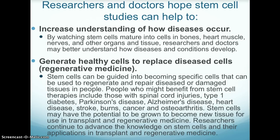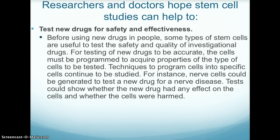Researchers continue to advance knowledge on stem cells and their application in transplant and regenerative medicine. Researchers also hope to use stem cells to test new drugs for safety and effectiveness. Before using new drugs in people, some types of stem cells are useful to test the safety and quality of investigational drugs. For testing to be accurate, the cells must be programmed to acquire properties of the types of cells to be tested. For instance, nerve cells could be generated to test a new drug for a nerve disease, showing whether the drug had any effect on the cells and whether the cells were harmed or not.